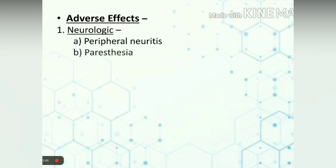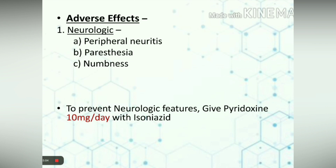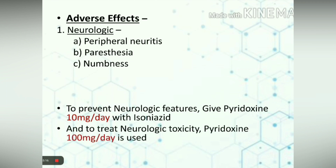Adverse effects: the most important dose-dependent toxic effect is neurologic, which consists of peripheral neuritis, paresthesia, and numbness. They are seen mainly because: first, isoniazid interferes with the production of active coenzyme pyridoxal phosphate from pyridoxine; and second, it increases the excretion of pyridoxine. Therefore, pyridoxine is given prophylactically to patients with diabetes mellitus, chronic alcoholics, malnourished people, and pregnant or lactating women. A dose of 10 mg per day is given. But if neurologic toxicity is already present, pyridoxine in a dose of 100 mg per day is used.